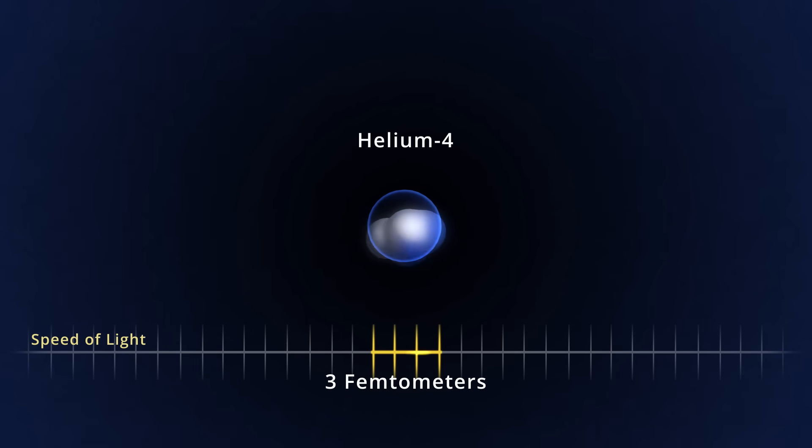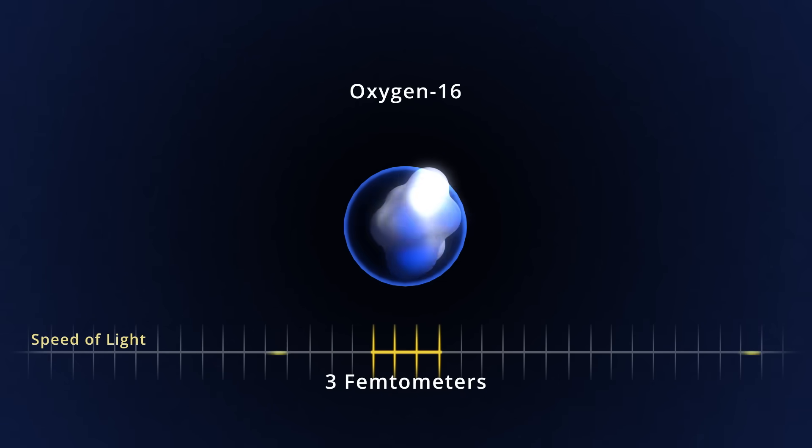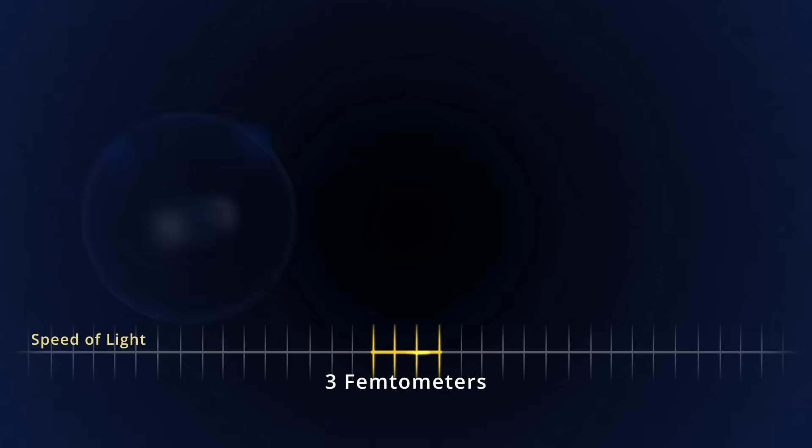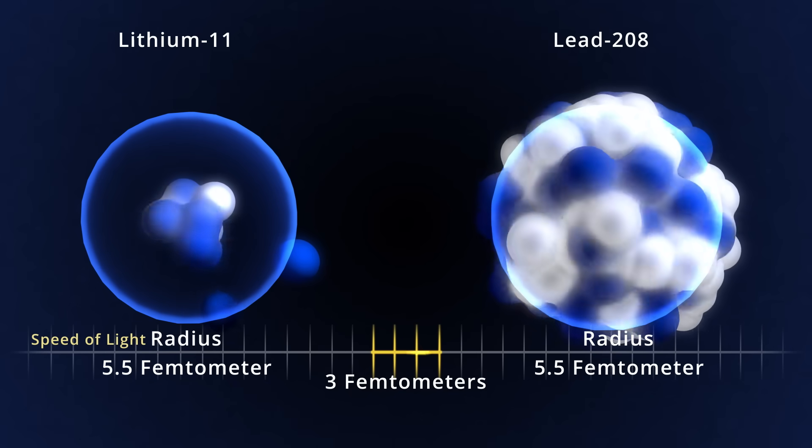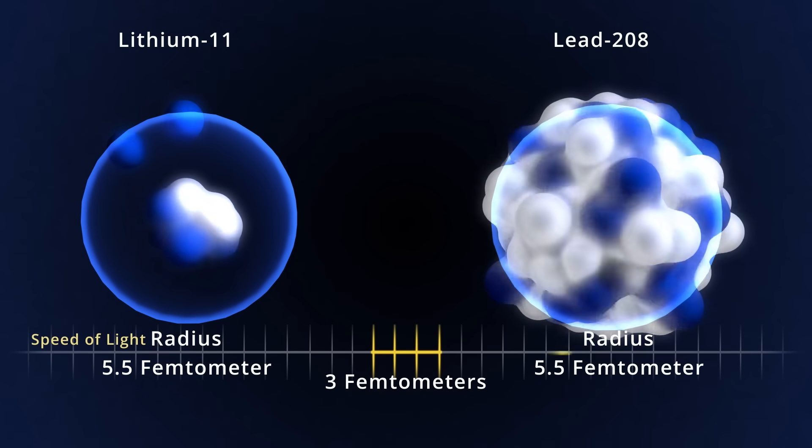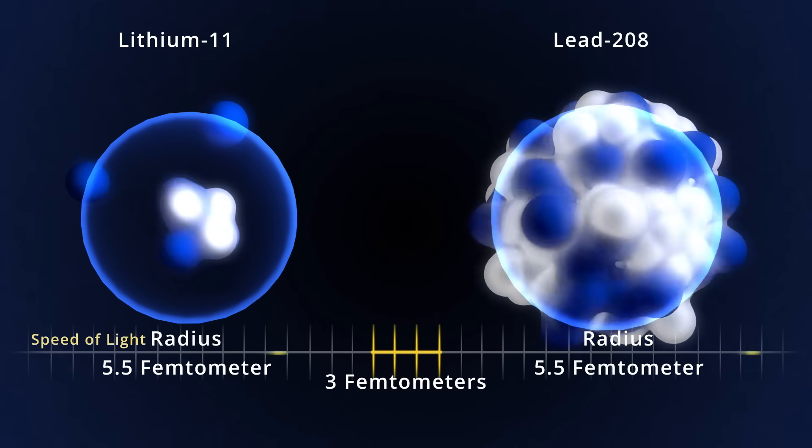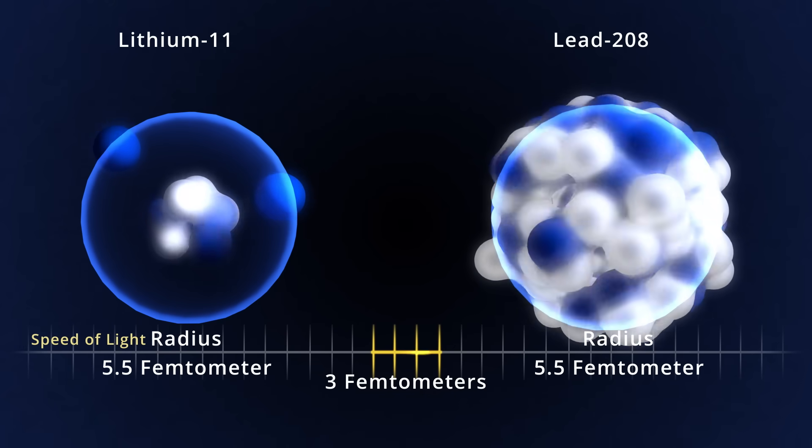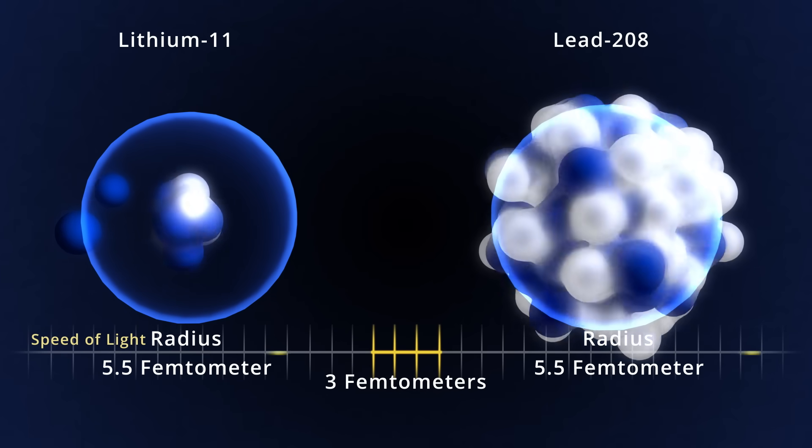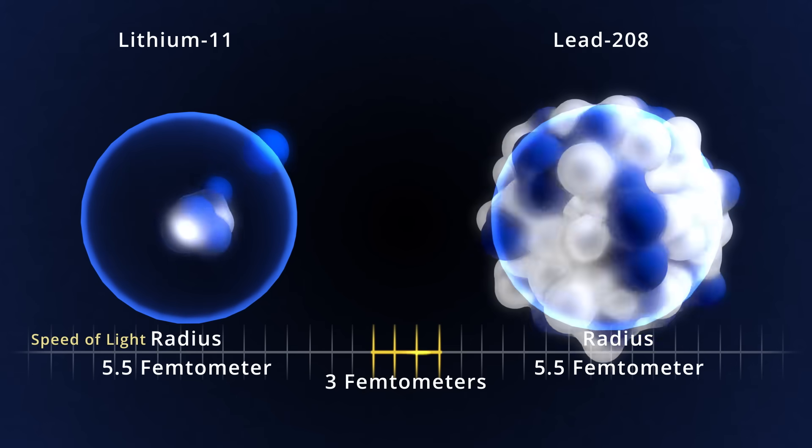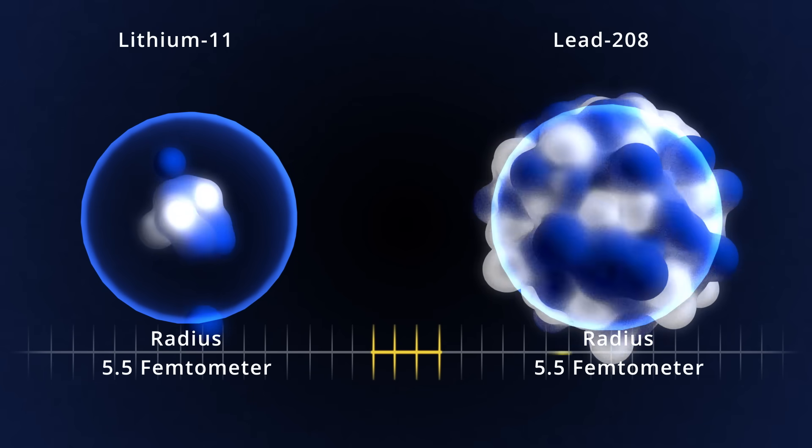The size of most nuclei grows with the number of protons and neutrons inside them, though there are striking exceptions. Lithium-11, with 3 protons and 8 neutrons, has a similar radius as lead-208, with 82 protons and 126 neutrons. Lithium-11 is called a halo nucleus, and can be visualized as a core with 2 additional neutrons circling in the periphery.